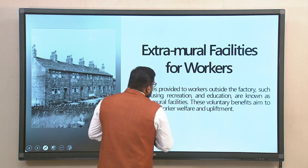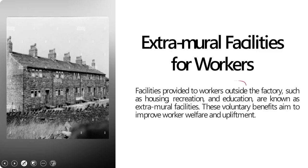Facilities provided to workers outside the factory — it could be housing, it could be recreation and education — they are all known as extramural facilities. Please note: extramural facilities are voluntary benefits which are aimed to improve worker welfare and upliftment.